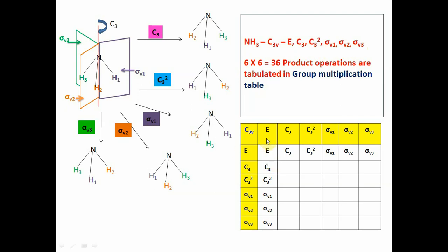This group multiplication table contains the symmetry operations of the C3V point group along both sides, and these grids are going to be filled up with the product operations. The first row and the first column of the group multiplication table can be easily filled by doing identity followed by identity, identity followed by C3, identity followed by C3², and so on — we get the same operations filled in the first row. Similarly, the first column is filled by taking C3 followed by identity, C3² followed by identity, and so on.